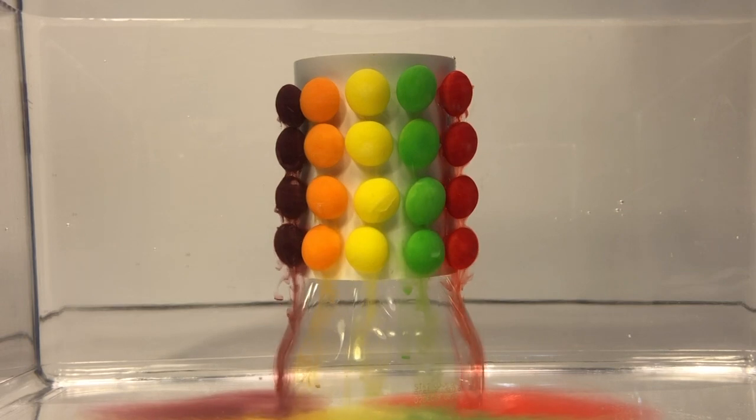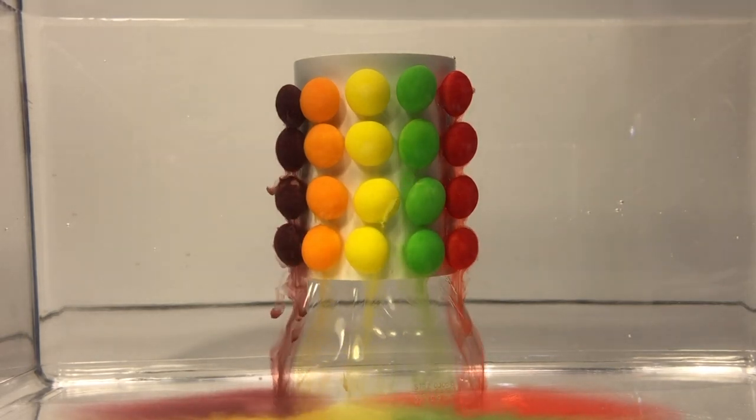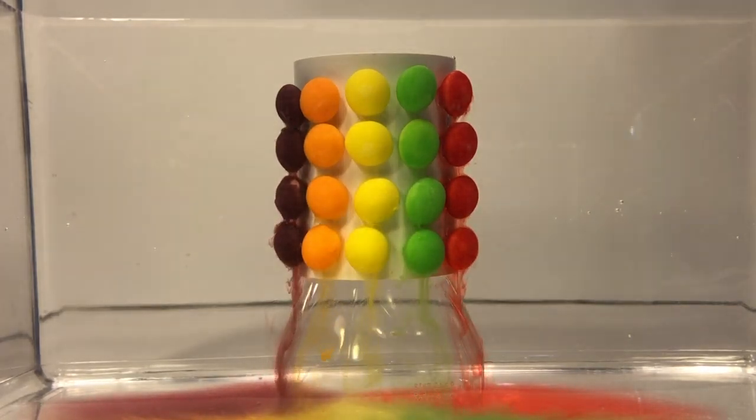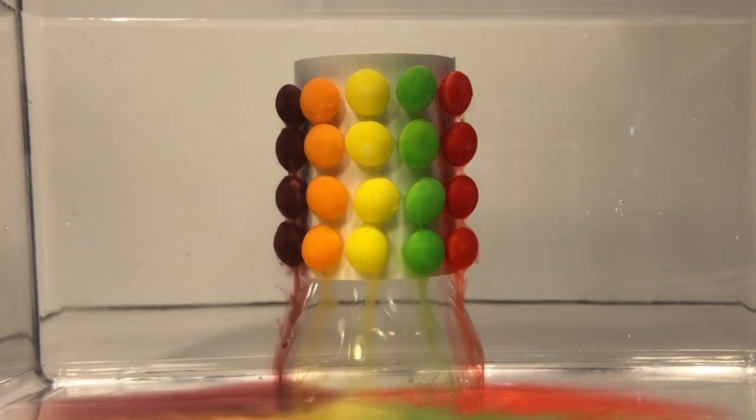This experiment has three concepts. The first is solubility. The food coloring used to coat the surface of the candies is water soluble. When placed in the water, the coloring dissolves gradually, turning the clear water into colored water.